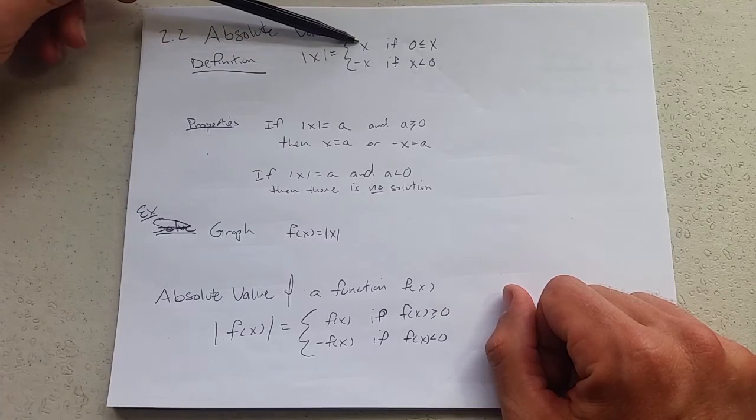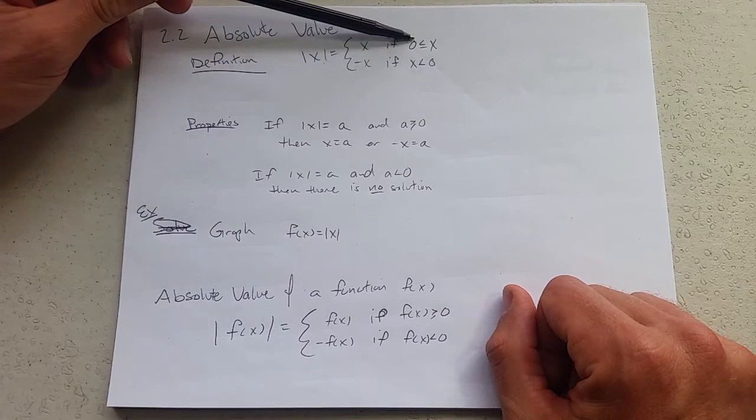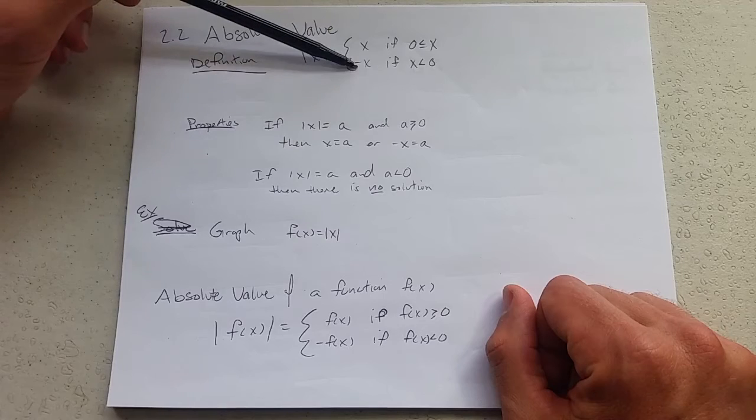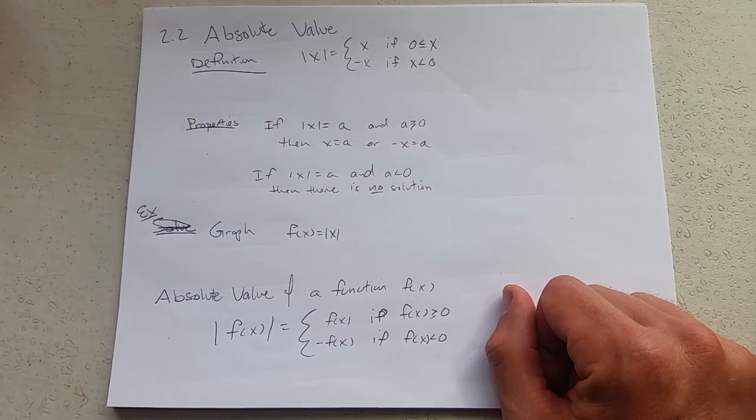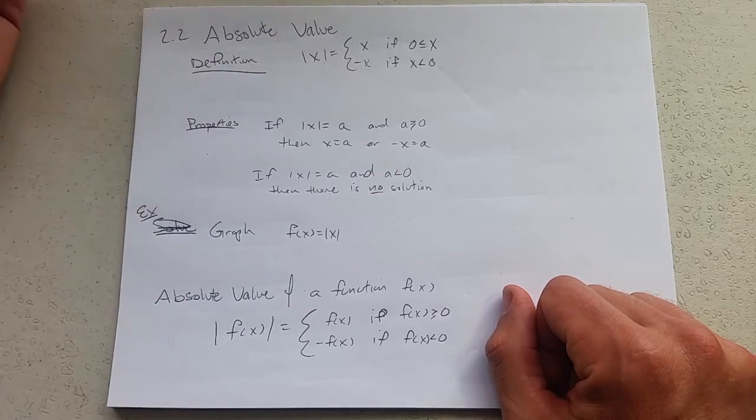The absolute value of x is equal to regular x if x is already positive and it equals negative x if x is not positive. If x is negative we basically make it positive.